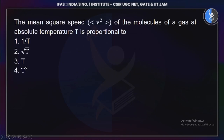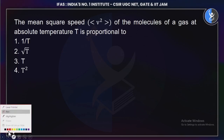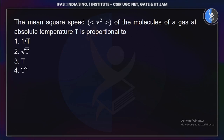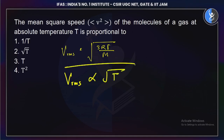The first question is: the mean or RMS speed of a molecule of a gas is proportional to absolute temperature. If you know RMS speed, the formula involves 3RT. This is a very easy question based on the RMS formula.